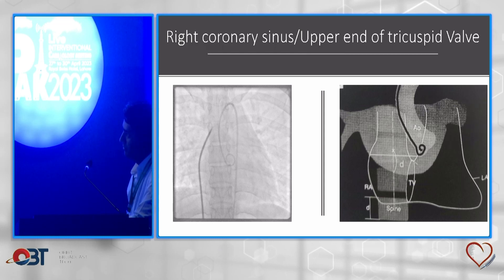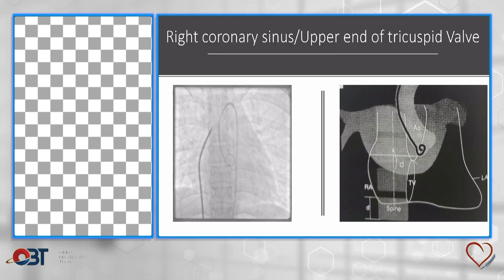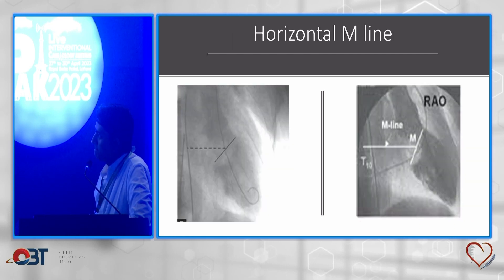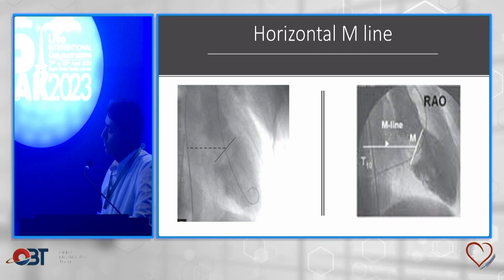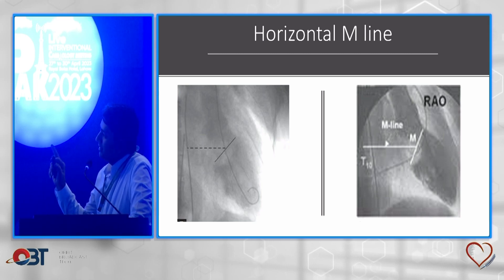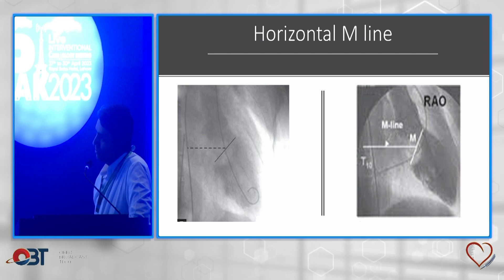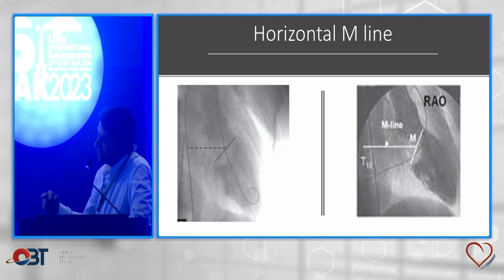How to identify these on the angiogram: the upper border of the tricuspid valve — on the left image, the pigtail is placed in the right coronary sinus, marking the upper end of the tricuspid valve. For the horizontal M line, for trainees and new operators, identify it in RAO view. We do an LV angiogram in RAO view and identify the LVOT. From the center of the LVOT, we draw an imaginary line — the horizontal M line. We mark it through the T10 vertebra, either one and a half disc above or below; T10 vertebra is the identifying mark for this horizontal M line.